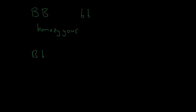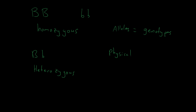If someone has two different alleles, we call them heterozygous. The genetic makeup of an individual — which alleles they have — is called their genotype. The physical characteristics that result from those alleles are called the phenotype of the individual.